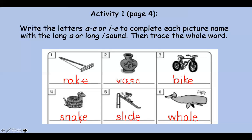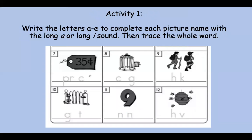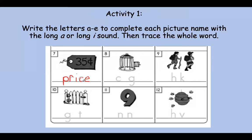Nice job, friends. Let's go on to number seven. Not sure if you know what this is — this is a price tag. On the price tag, there is the price, or how much something costs. So let's say price really slowly. Do you hear long A or long I in price? You got it, it's an I. Let's write it in there. We need our silent E to make I say the long sound. Let's trace over price.